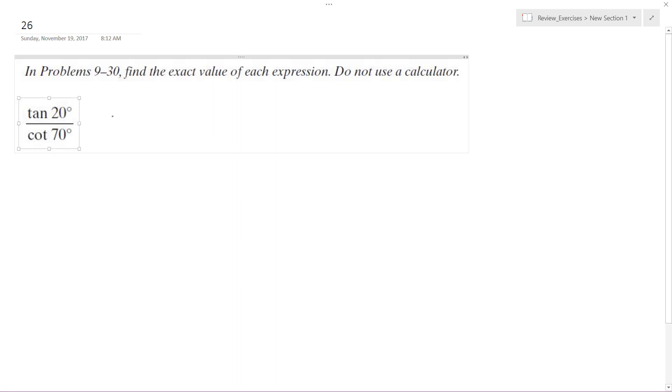All right, solving this problem, we can rewrite this as the sine of 20 degrees over the cosine of 20 degrees times, so on the bottom here, this is cosine 70 over sine 70.